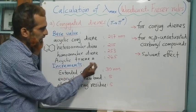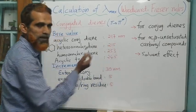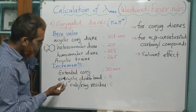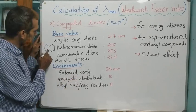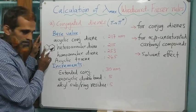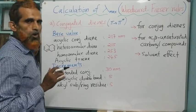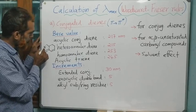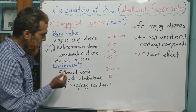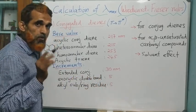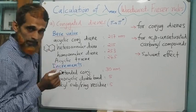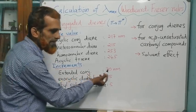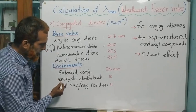For an acyclic triene (open-chain conjugated triene), the base value is 245 nm. To this base value we add increments. For extended conjugation — an additional double bond in conjugation — add 30 nm. Recall that ethylene has a pi-pi* lambda max of 167 nm, and butadiene increases it to about 200 nm, generally increasing by 30 nm per additional conjugated double bond. For an exocyclic double bond, add 5 nm.